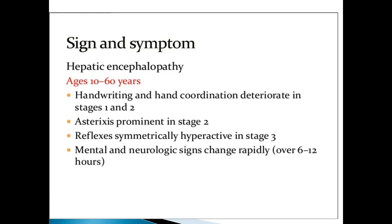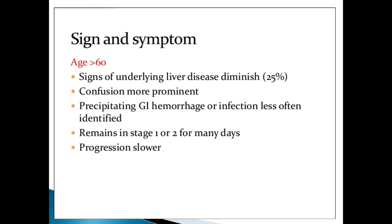In hepatic encephalopathy, the most important target organ is the brain. It occurs between 10 to 60 years. Handwriting and hand coordination deteriorate in stages one and two. In stage two, asterixis — that is flapping tremors — is prominent. Reflexes are symmetrically hyperactive in stage three. Neurological signs change rapidly over 6 to 12 hours. If age is more than 60, signs of underlying liver disease diminish, liver is very small, ALT becomes very low, confusion is more prominent, and diagnosis is often delayed.